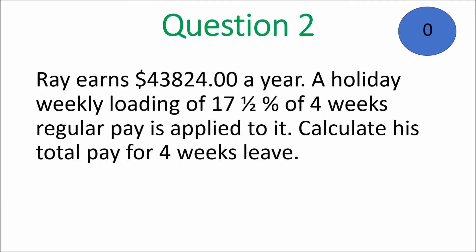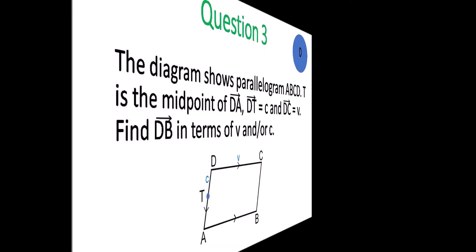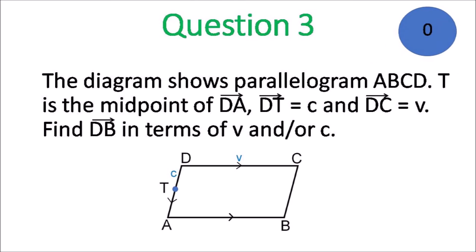We move on to question 3. The diagram shows parallelogram ABCD. T is the midpoint of vector DA. Vector DT is equal to c and vector DC is equal to v. Find vector DB in terms of v and/or c.